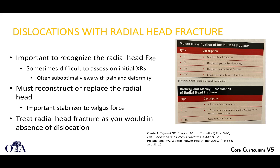Regarding dislocations with radial head fractures, remember there are classifications for radial head fractures — the Mason classification and Broberg and Morrey classifications, shown on the right. First, you have to make sure you recognize that there is a radial head fracture. Sometimes on x-rays, especially on the lateral image, certain fractures may be missed. The AP x-ray initially may be dislocated, and your post-reduction x-ray may not be a perfect AP because the elbow is flexed, so you have to make sure you don't miss these.